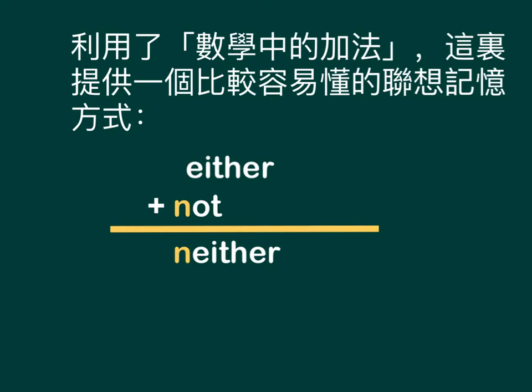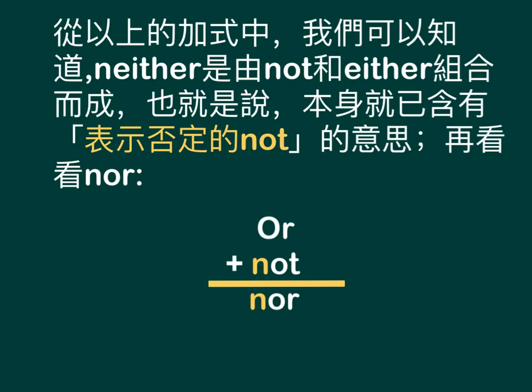Here is an easier way to remember using association with math addition. Either + not = neither. From this equation, we can understand that 'neither' is formed by combining 'not' and 'either'. That means 'neither' itself already contains the meaning of negation — 'not'.